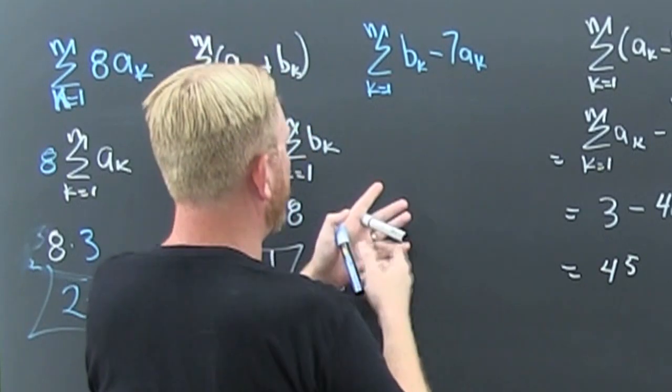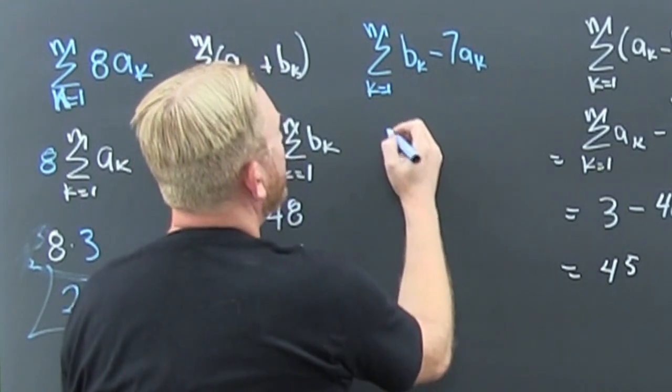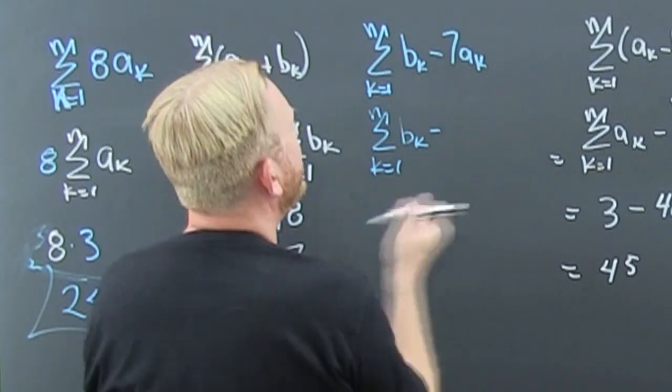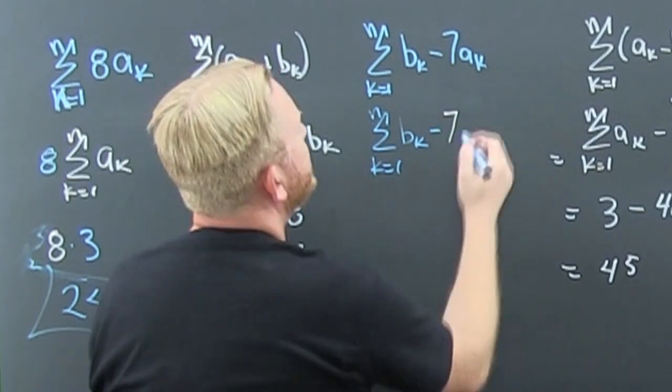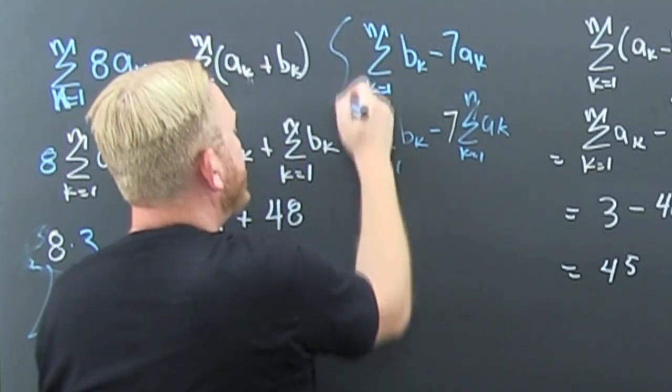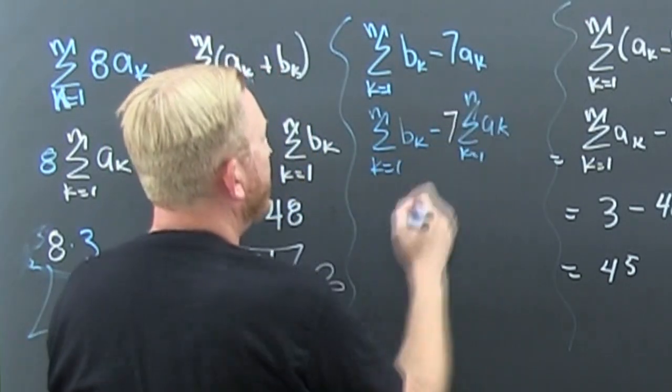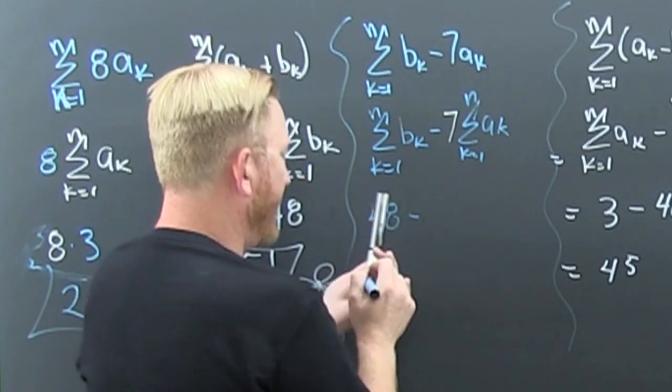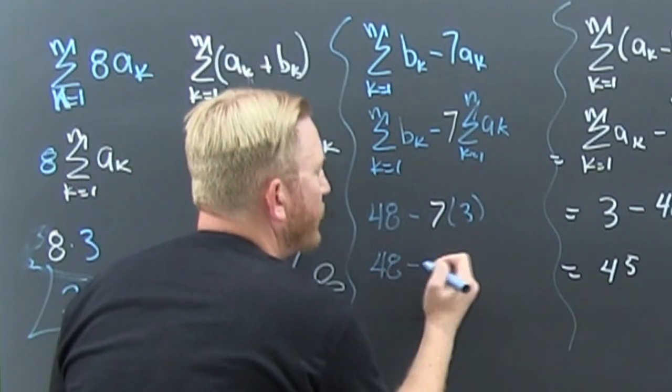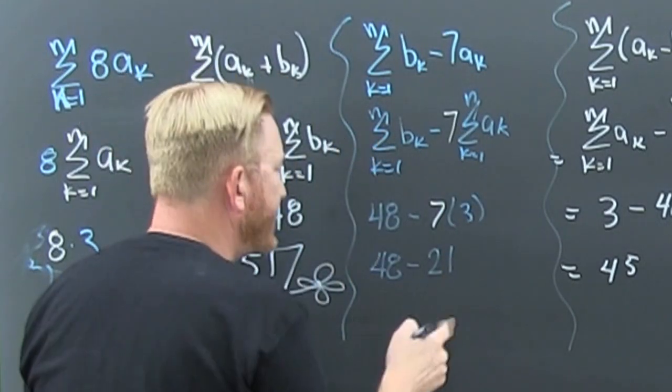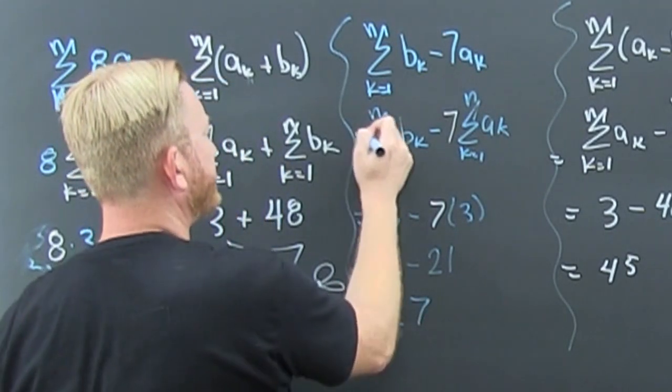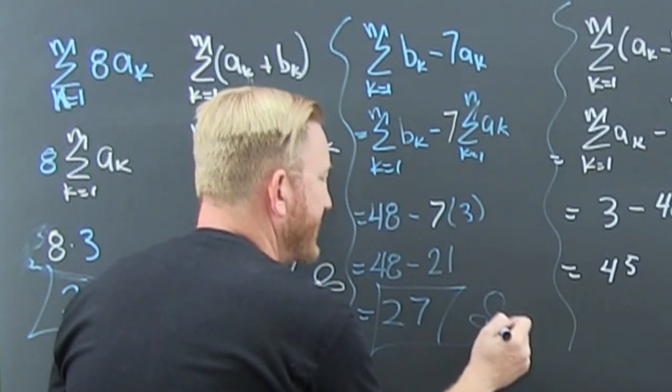So the sum of the sum is the sum of the sums. And I'm going to pass that constant out. So here we go. That's the sum K equals 1 to N of BK minus 7 times the sum of AK, where K starts at 1 and goes to N. My BK is 48 great weight. And then that's 7 times whatever my AK was, it was 3. So that's 48 minus 21. What is that? Is that 27? I don't know. If I get it wrong, you'll let me know in the comments.